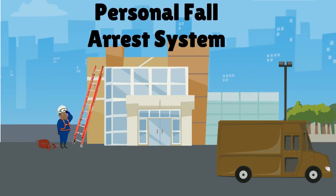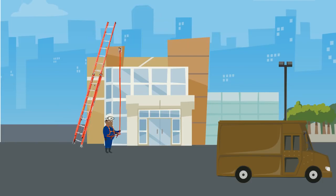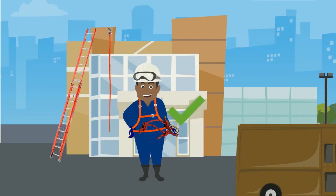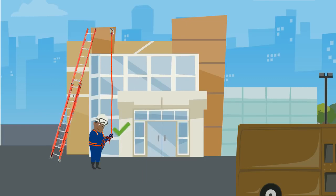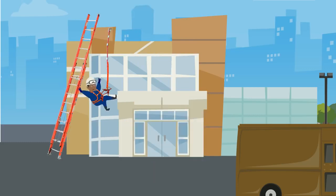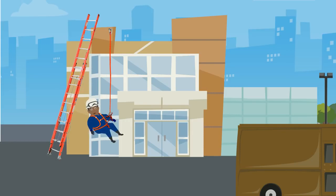One way to prevent falls is to use a personal fall arrest system. It anchors or ties the worker to a fixed object through the use of a safety harness worn by the technician. A lanyard, lifeline, or deceleration device connects the safety harness to a fixed object and an anchor point. The anchorage point must be able to withstand 5,000 pounds of force. If the wearer loses their balance and falls, the lifeline prevents them from falling all the way to the ground.